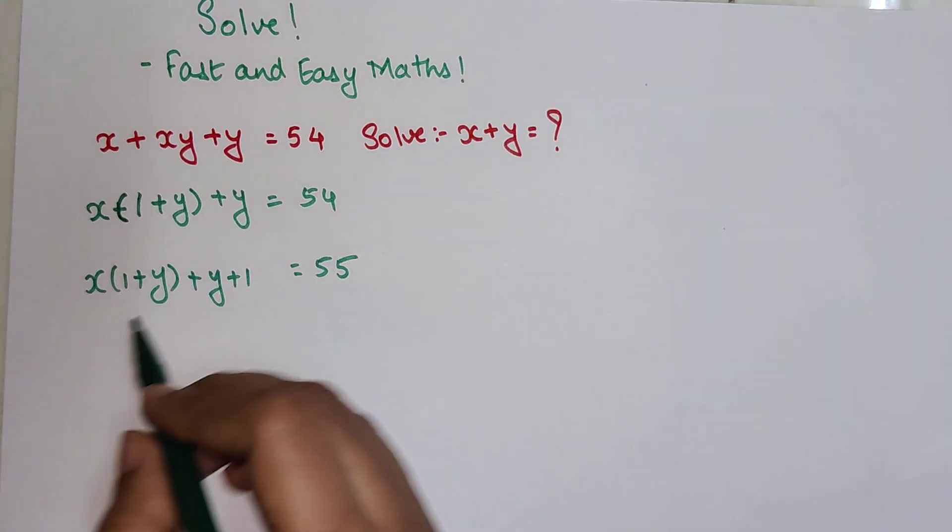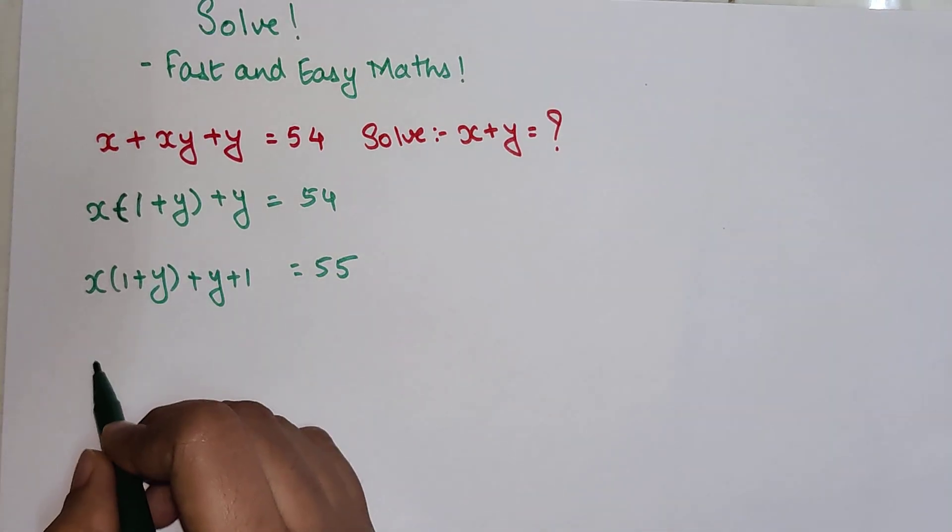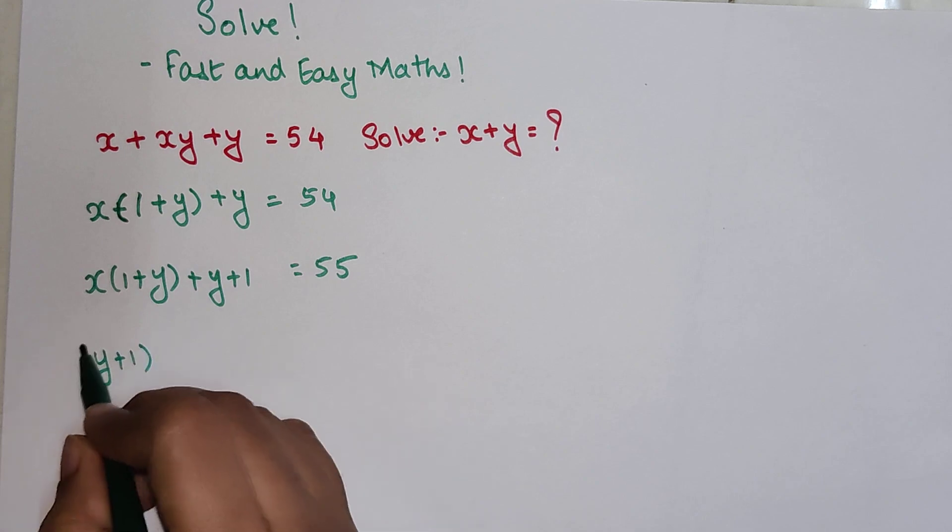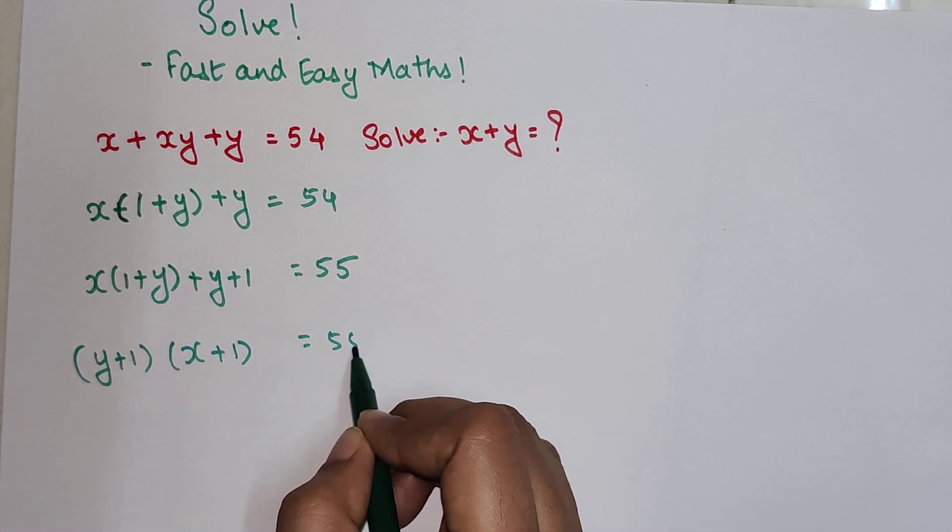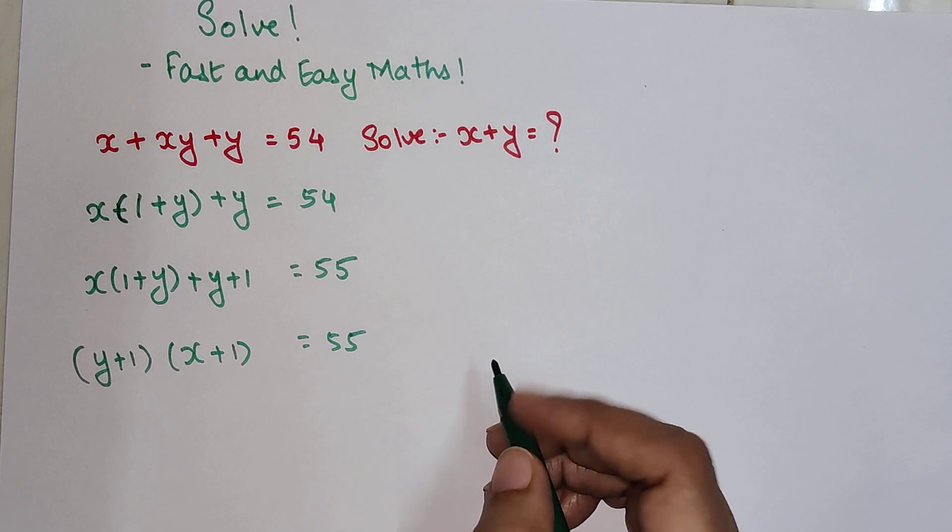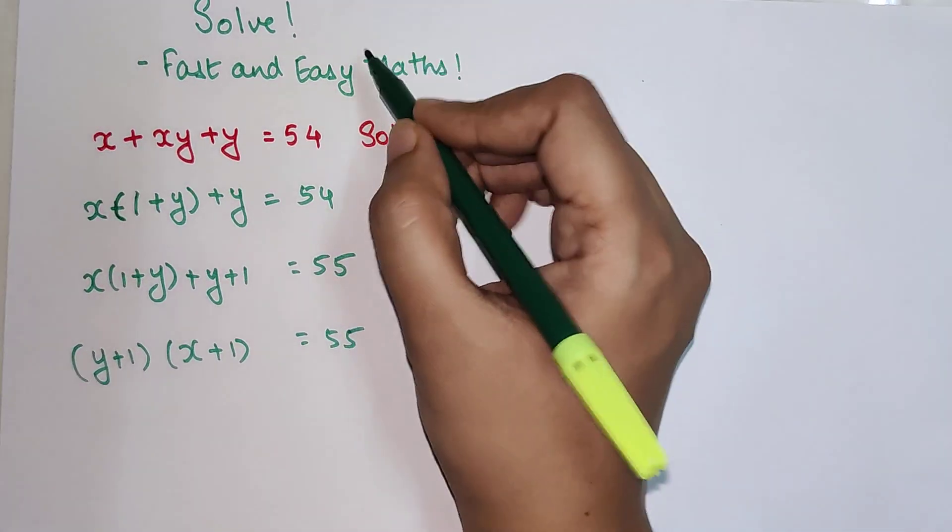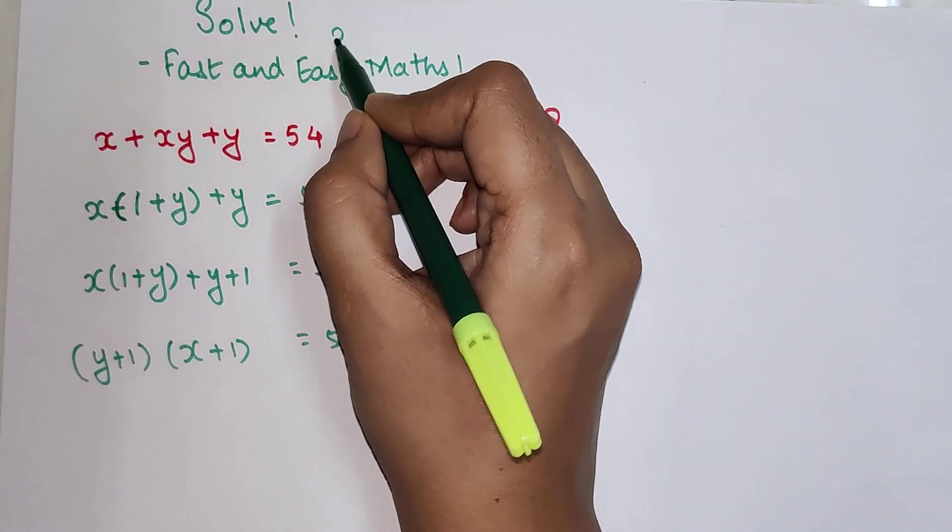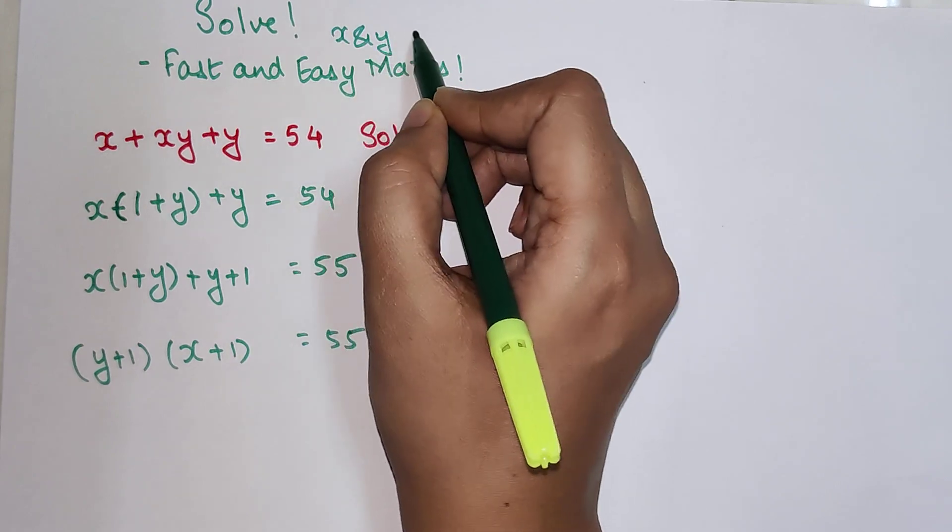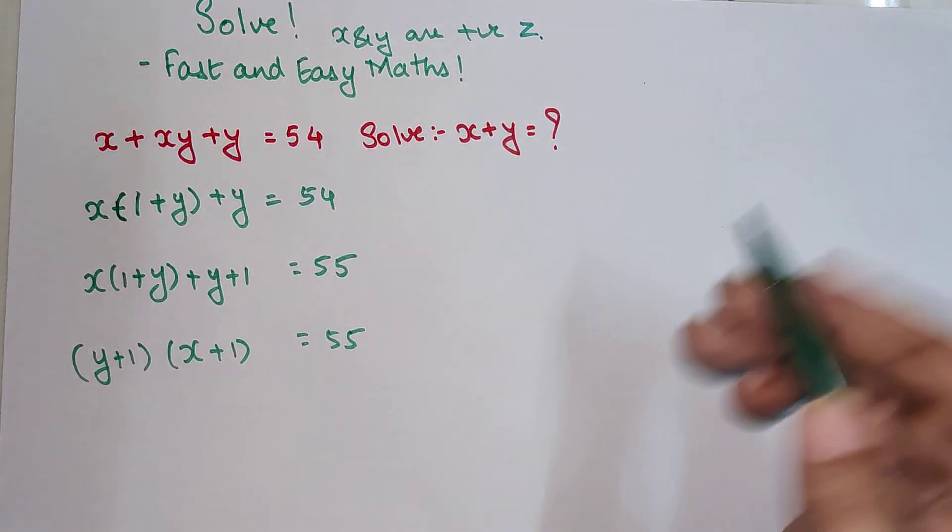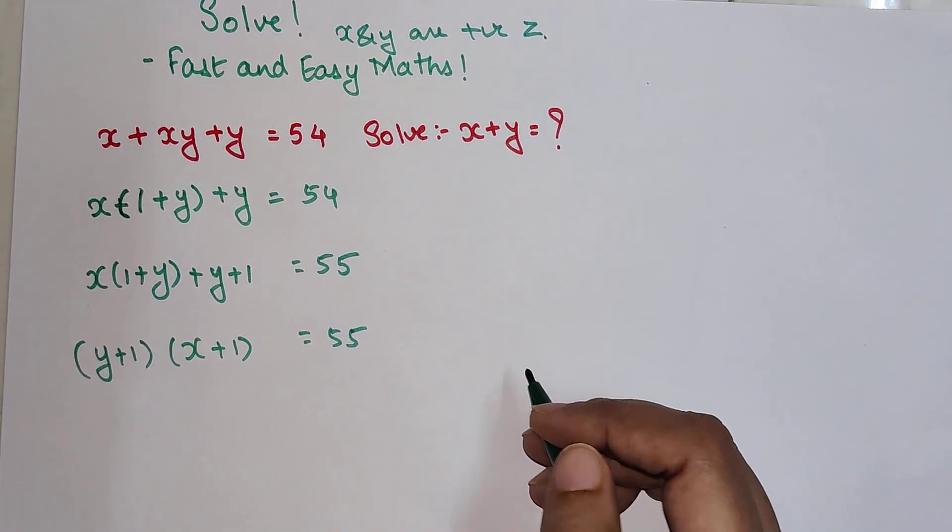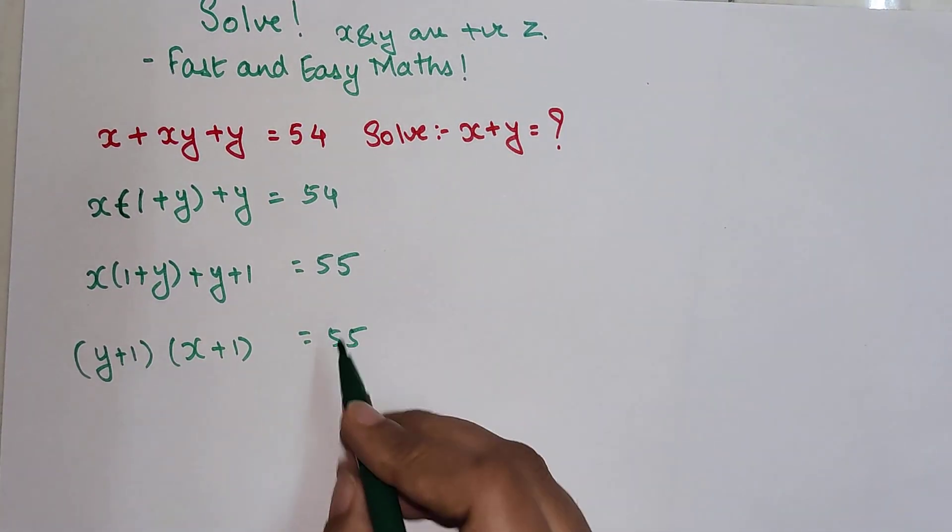So now out of these two, I can say that (y + 1) can be taken common and I will be left with (x + 1) = 55. And one thing which was missing was x and y are positive integers.